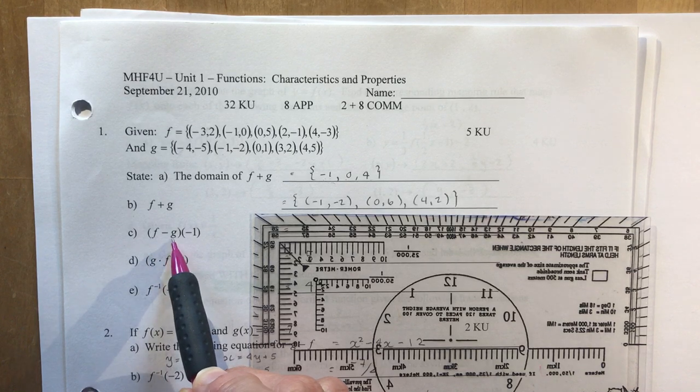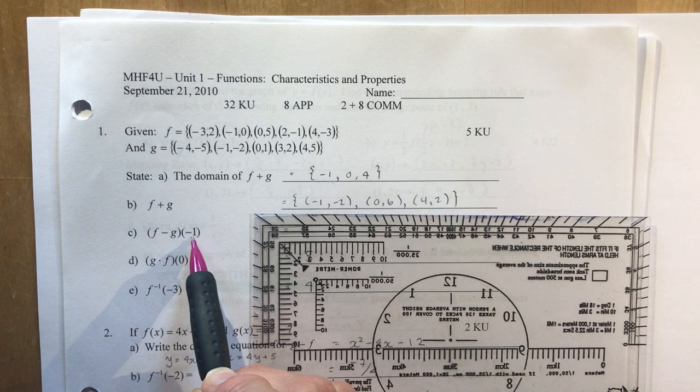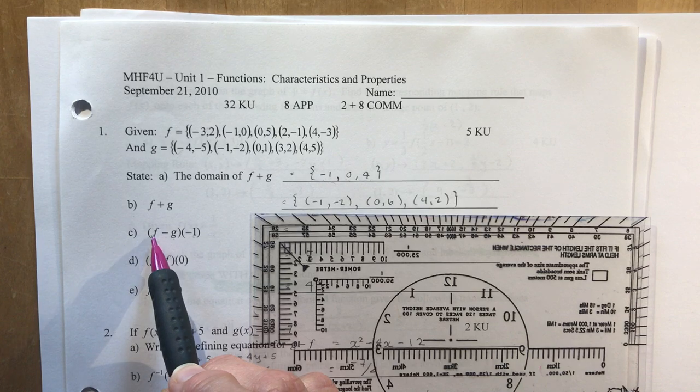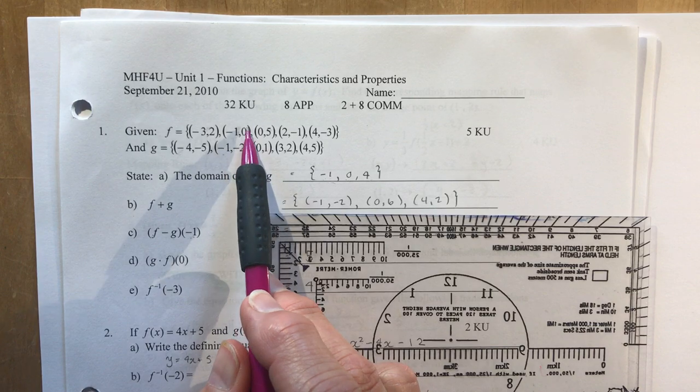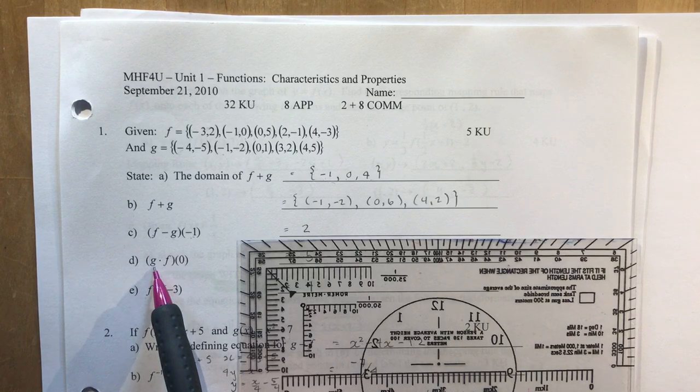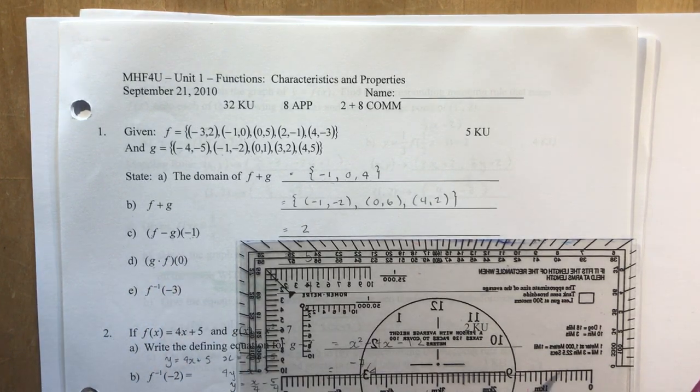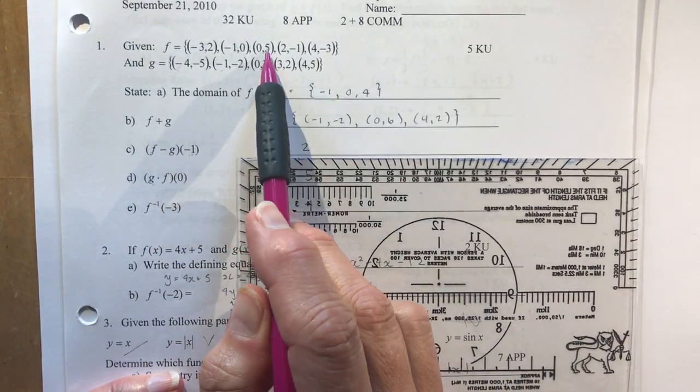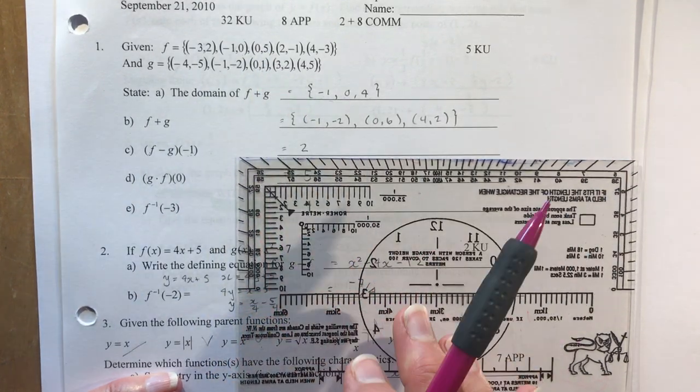What's f minus g at negative one? Okay, so this is telling you the x coordinate is minus one and it's asking me to subtract the y coordinate of the function f from the g. So I look to minus one. So I want f minus g. So that's zero minus minus two is plus two. What's g times f when x is zero? You need to know how to read these things. You can't read it, you won't know what to do.